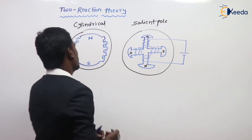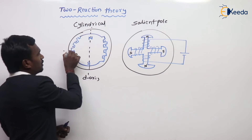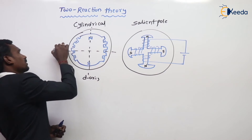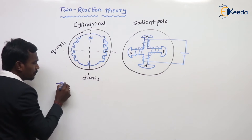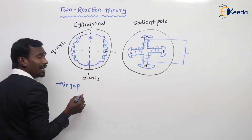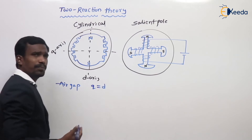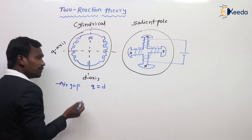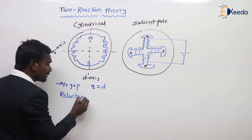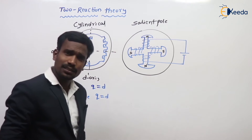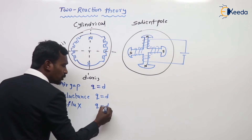Generally, we know this is the D-axis and this, which is in quadrature, is the Q-axis. First of all, the air gap: the air gap is the same for D-axis and Q-axis. If the air gap is same for Q-axis and D-axis, and if the reluctance is also same, then the flux is the same for Q-axis and D-axis.